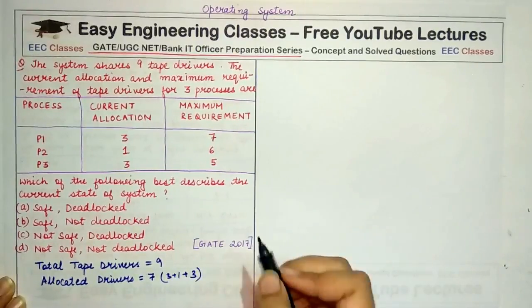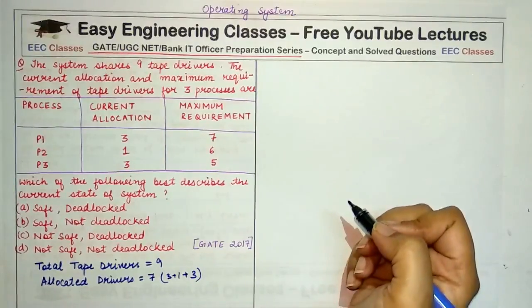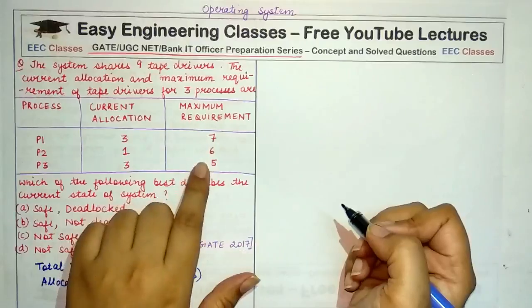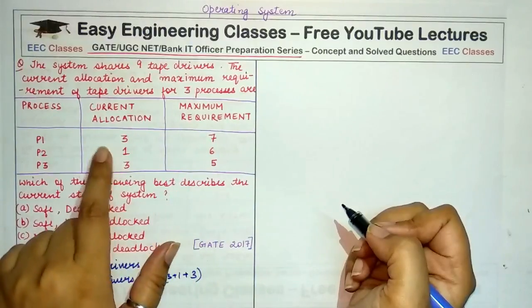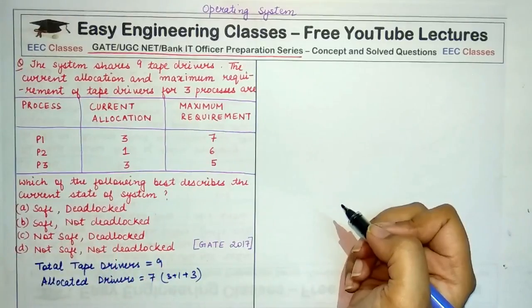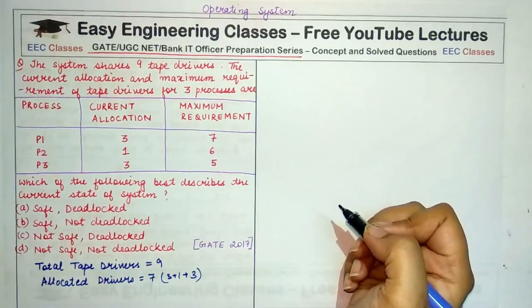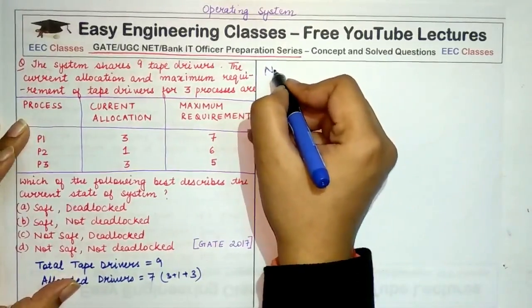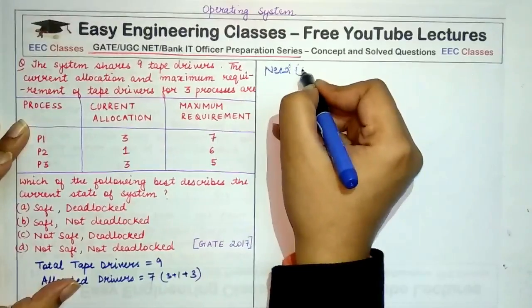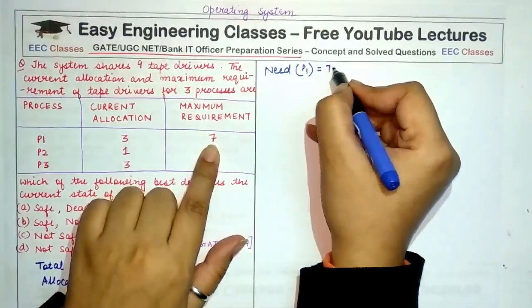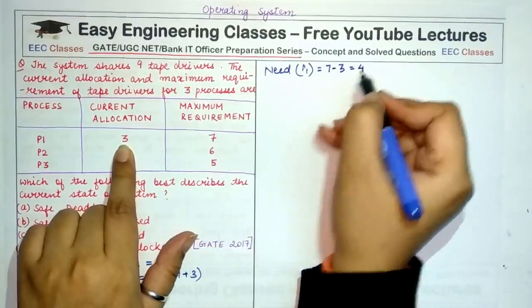Now we have to find out the need of each process. By need I mean that if this is the maximum requirement and these much of the tape drivers are allocated to each process respectively, how much maximum tape drivers a process needs more to complete its execution? So if I calculate need of P1, need of P1 is its requirement minus its allocation which is equal to 4.